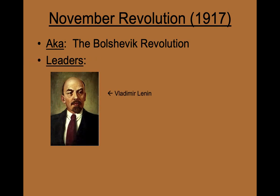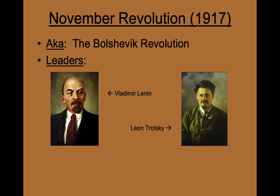Specifically, the Bolsheviks were led by two men. The first was Vladimir Lenin, who would become the new leader of Russia after the revolution, and the second was one of his assistants, a man named Leon Trotsky. Trotsky had been responsible for developing and spreading propaganda about the Tsar and provisional government and was very influential in convincing the citizens to trust and follow the Bolsheviks.